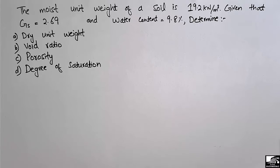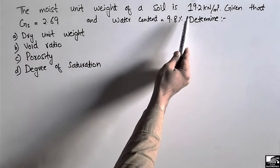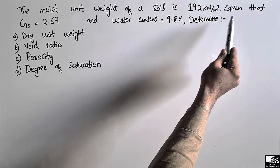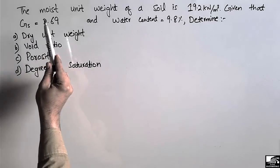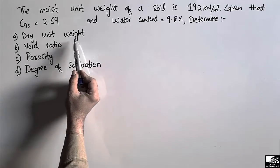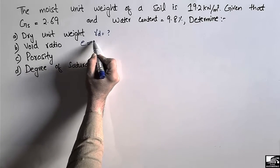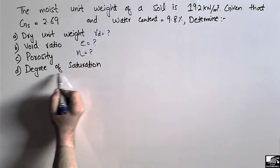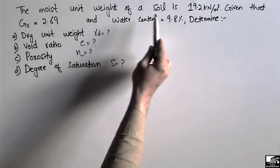Hello guys, welcome back to the Civil Engineering YouTube channel. Please subscribe for daily civil engineering videos. Today we are going to solve one numerical problem related to soil mechanics. The problem states that the moist unit weight of a soil is 19.2 kilonewton per cubic meter, specific gravity G is 2.69, and water content equals 9.8%. Determine the dry unit weight γd, void ratio e, porosity n, and the degree of saturation.